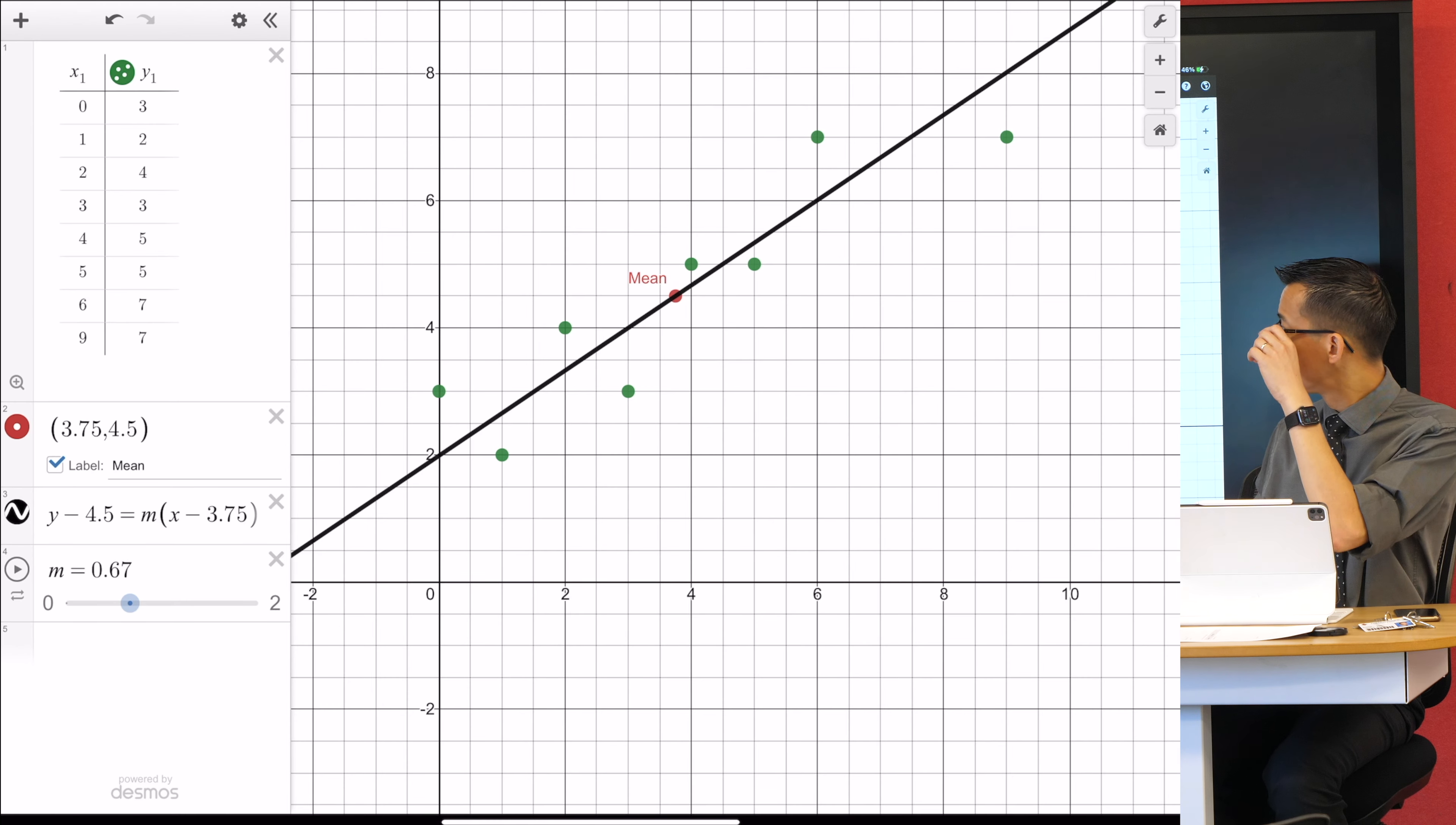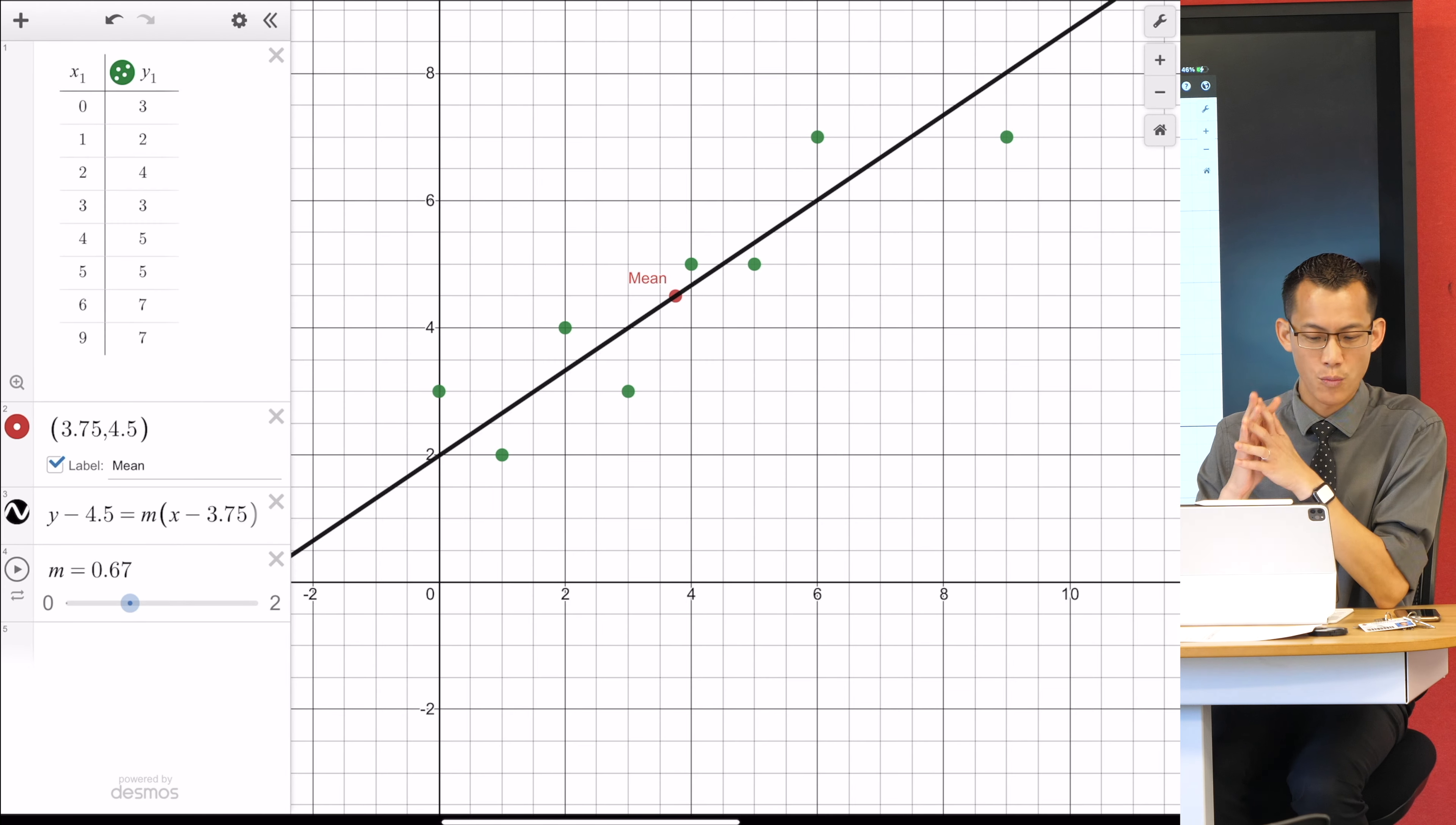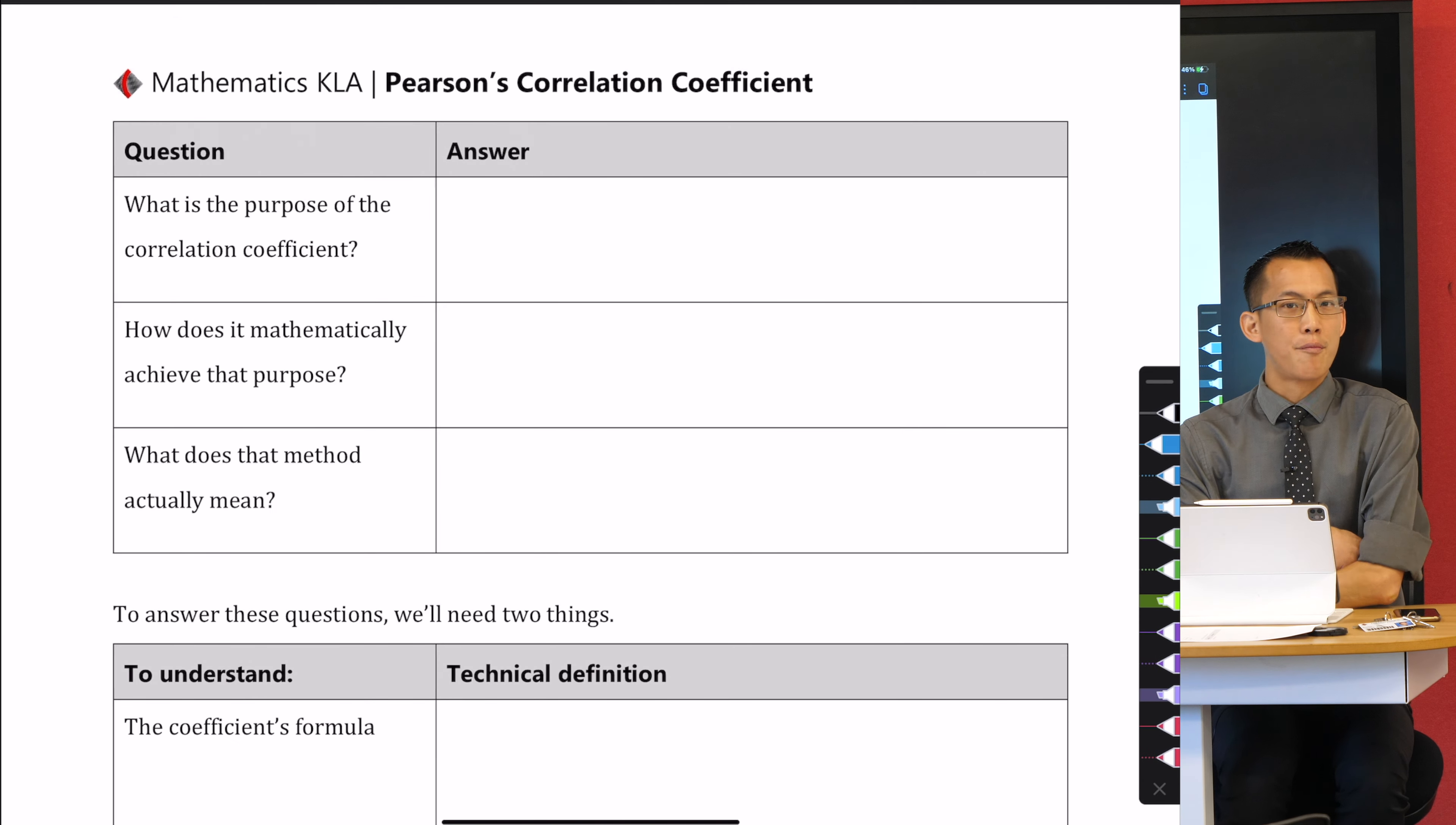I want to flow right out of this into the idea of can we do better than just getting it roughly okay, can we do something more precise? And that's where we introduce this idea of Pearson's correlation coefficient.